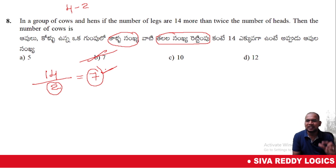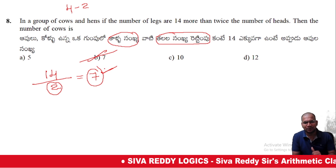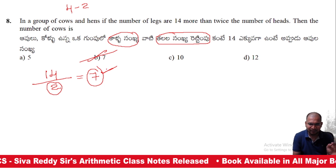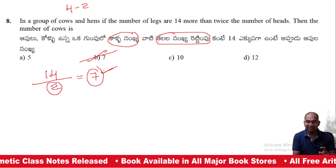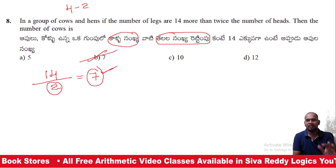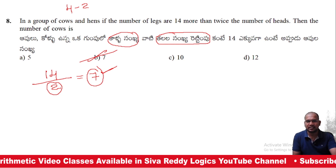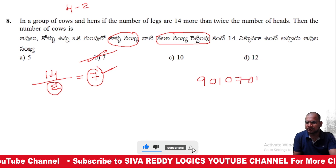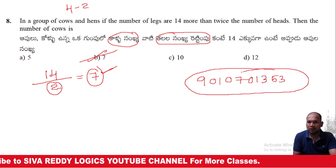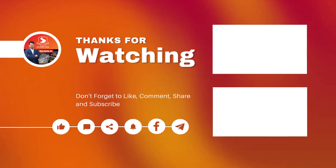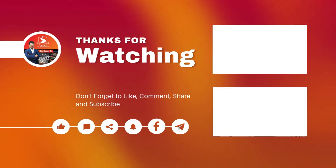This concludes the mixtures and allegations chapter from previous year questions. Six models and previous questions have been discussed. If you read the book, you can check bilingual questions with written solutions. If you have any comments about the subject, please share. Thank you all.